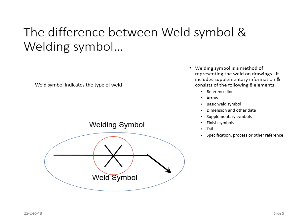A welding symbol is a method of representing the weld on drawings. It includes supplementary information and consists of eight elements: reference line, arrow, basic weld symbol, dimensions and other data, supplementary symbols, finishing symbols, tail, and specifications, process, or other references. All of that information can go into a welding symbol. But a weld symbol, circled in red here, is just the weld symbol — just what kind of weld it is.